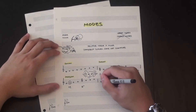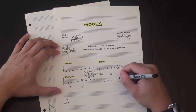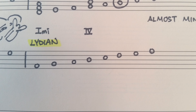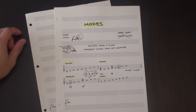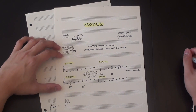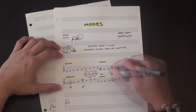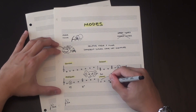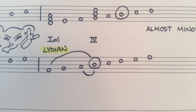Conversely, when we move up to F, we get one of the brightest and most consonant of the modes: Lydian. Lydian looks a lot like a major scale, but with a sharp 4th degree. This gives us a tritone between the root and the 4th, but more importantly, it gives us a whole step between the 4th and the major 3rd. This removes a lot of the tension between the two notes, and makes basically the entire scale sound resolved and at rest.